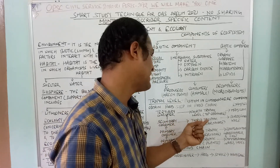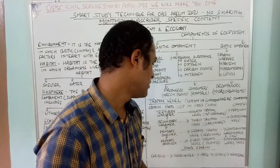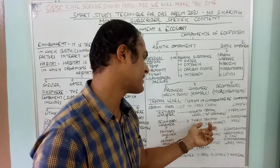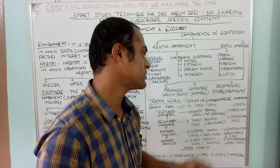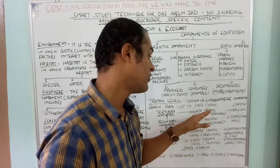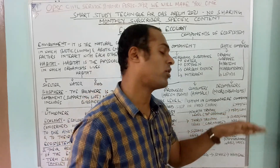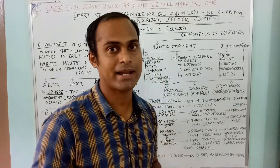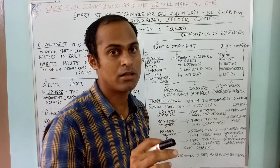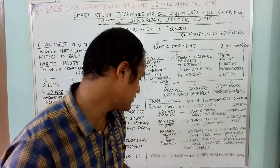The third trophic level is the secondary consumer — carnivores such as birds, fish, and wolves. The fourth and topmost trophic level is the tertiary consumer — top carnivores such as man and lion. We as humans are at the tertiary consumer level.